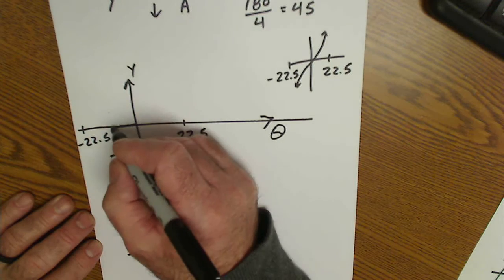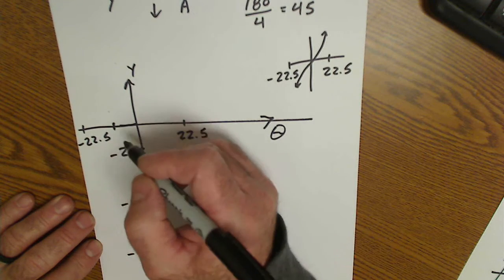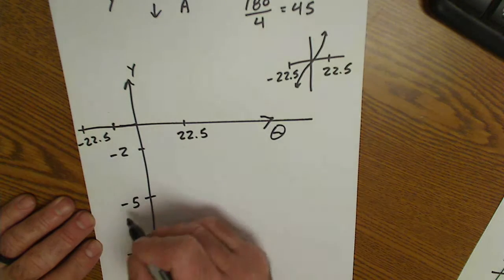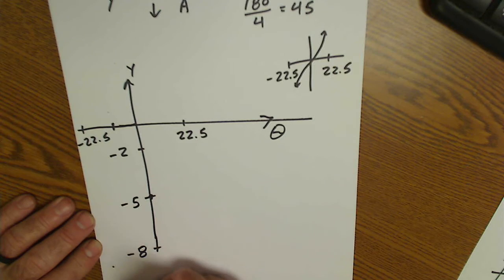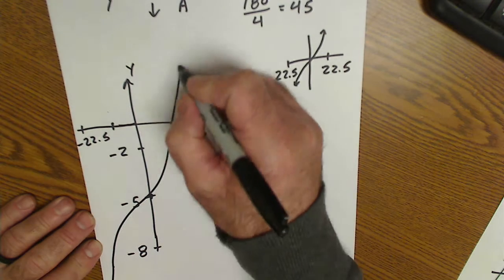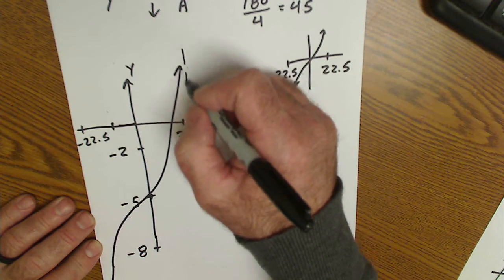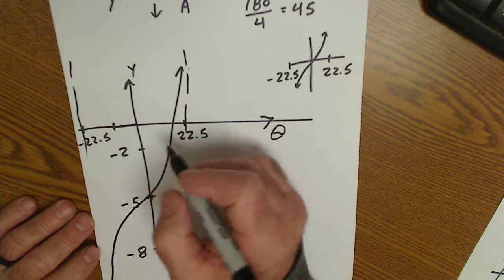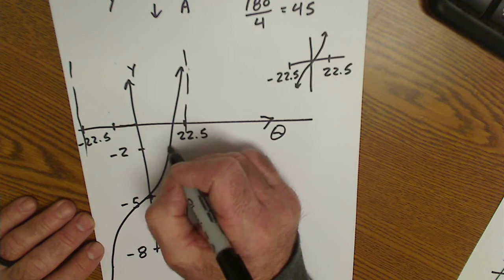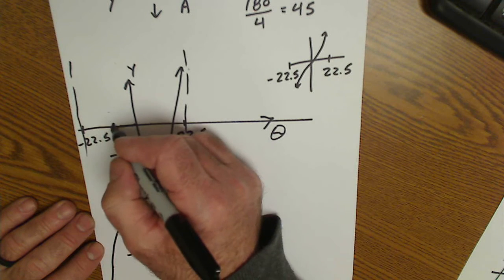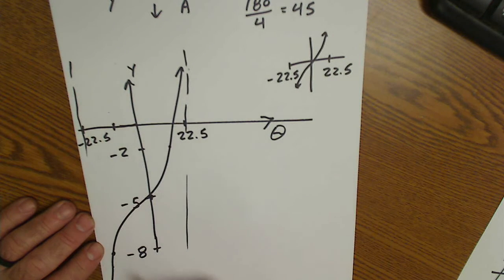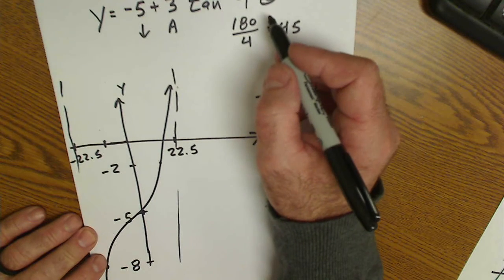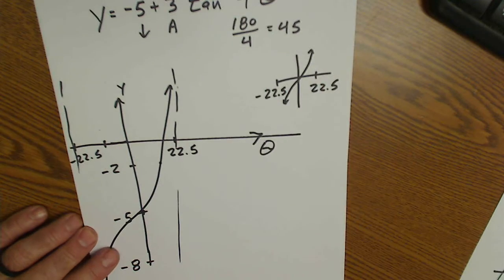Now it's tangent. This center point — tangent is going to go with an asymptote at 22.5, an asymptote at negative 22.5, a quarter point at 11 and a quarter at negative 2, and negative 11 and a quarter at negative 8. So those are my critical points. That's cotan and tan in degrees. I'll see you next time.